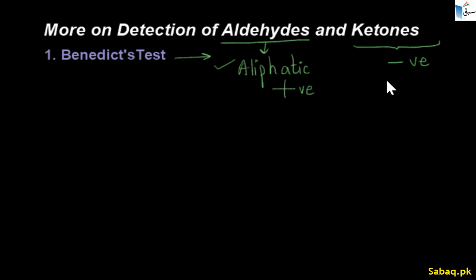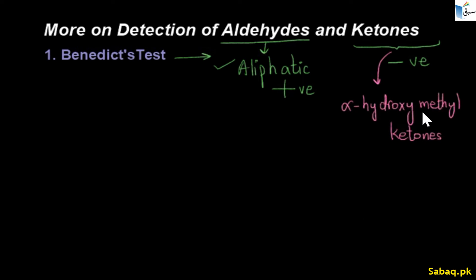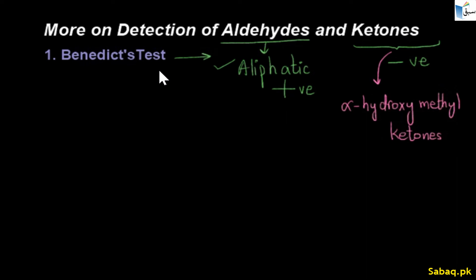If we talk about some exceptions, one exception is alpha-hydroxy methyl ketones. Alpha-hydroxy methyl ketones give a positive test for Benedict solution. Otherwise, all ketones give negative results. So if we have ketones and aliphatic aldehydes and test them, we can detect which is present.